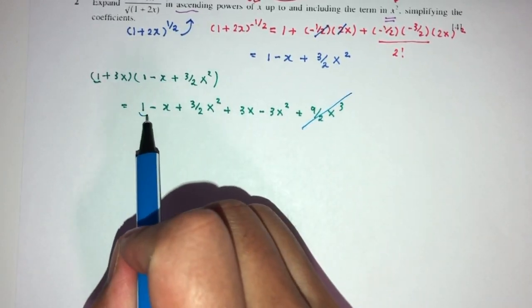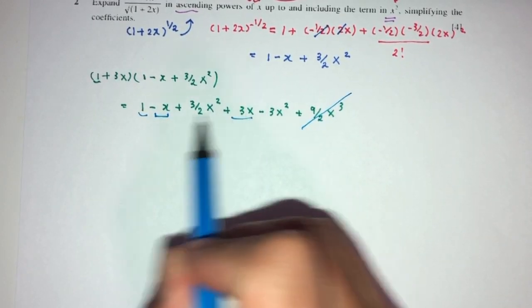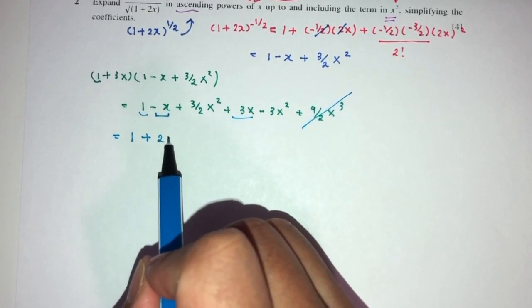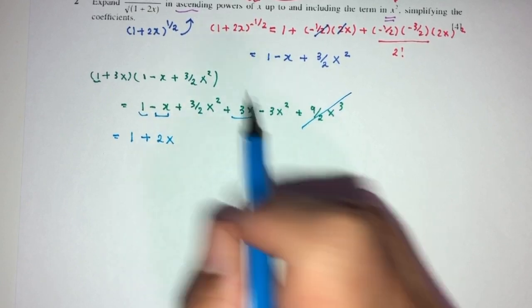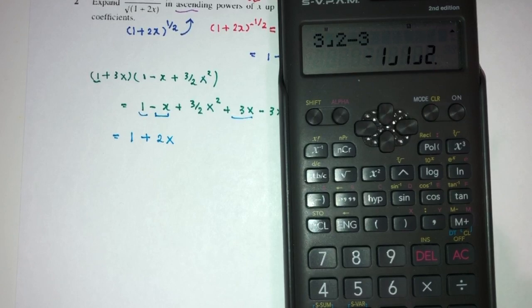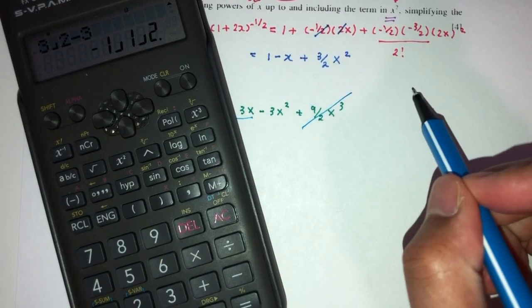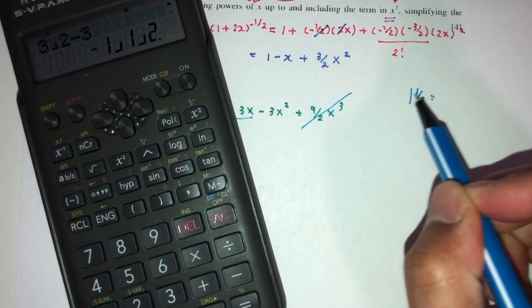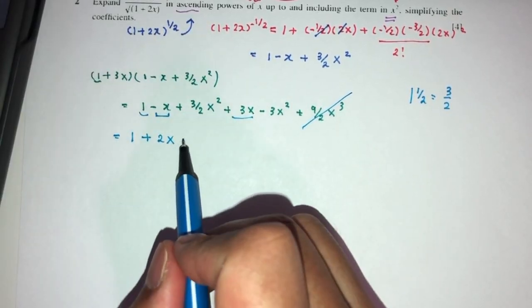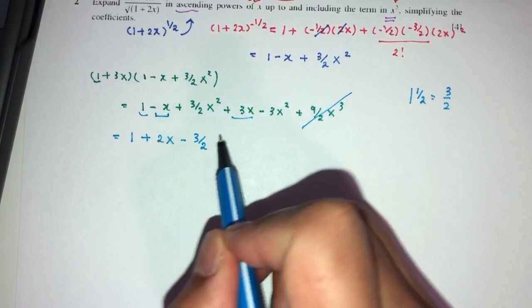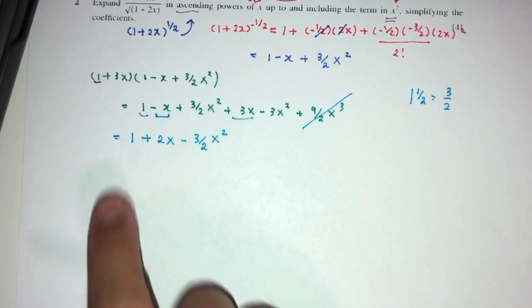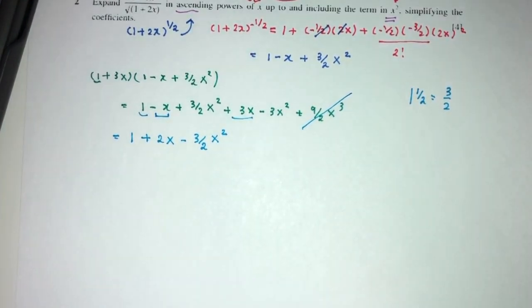Now, for the rest, we have to look at this, this, and this. So, 1 is 1. Minus 1 plus 3, that should be plus 2x. 3 over 2, minus 3. So, 3 over 2 minus 3, that should be minus 1 and a half. So, minus 1 and a half is what? 1 times 2 is 2 plus 1 is 3, so 3 over 2. So, minus 3 over 2 x squared. And this is your answer for question number 2. Expand up to x squared.